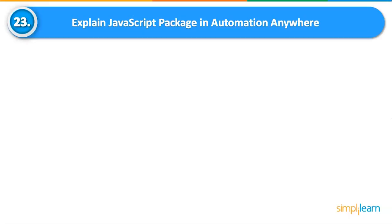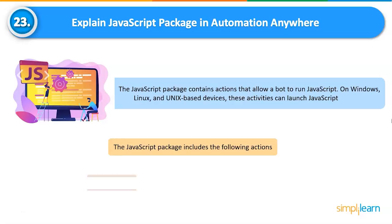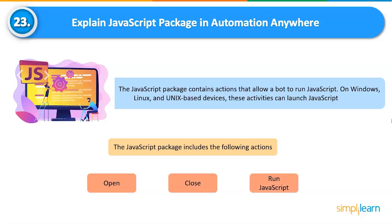Explain the JavaScript Package in Automation Anywhere. The JavaScript Package contains actions that allow a bot to run JavaScript on Windows, Linux, and Unix-based devices. It includes the following actions: Open — opens a JavaScript file in Automation Anywhere; Close — closes the session using the same session name from the open action; Run JavaScript — runs a function within the JavaScript.